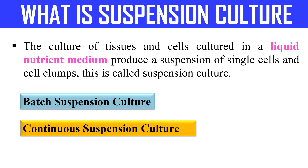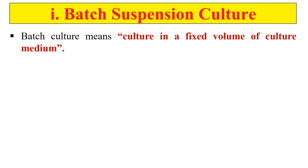Suspension culture can be of two types: batch suspension culture and continuous suspension culture. In batch suspension culture, the culture is done in a fixed volume of culture medium — the volume does not change during the culture. The volume of culture media remains the same throughout.